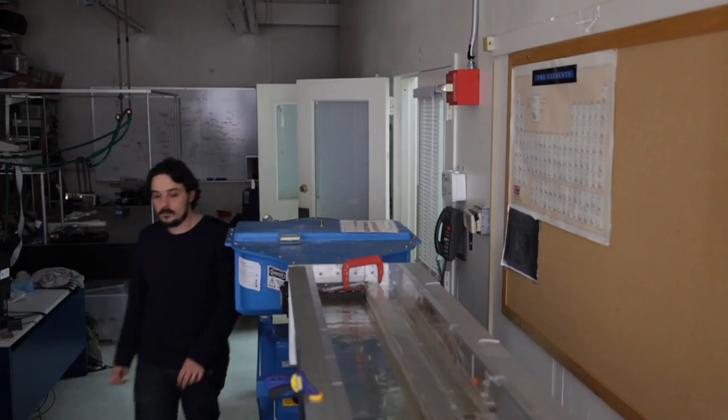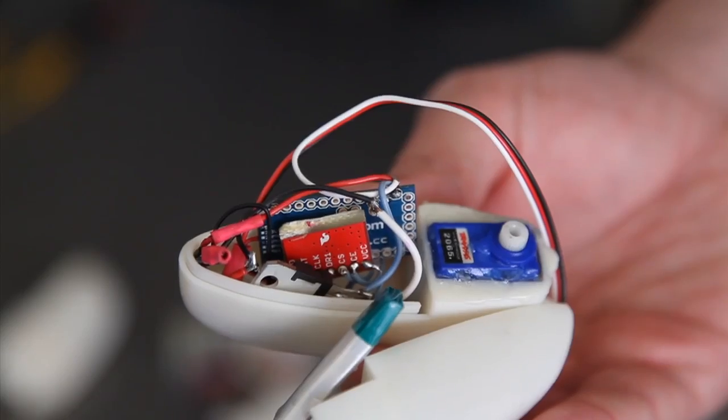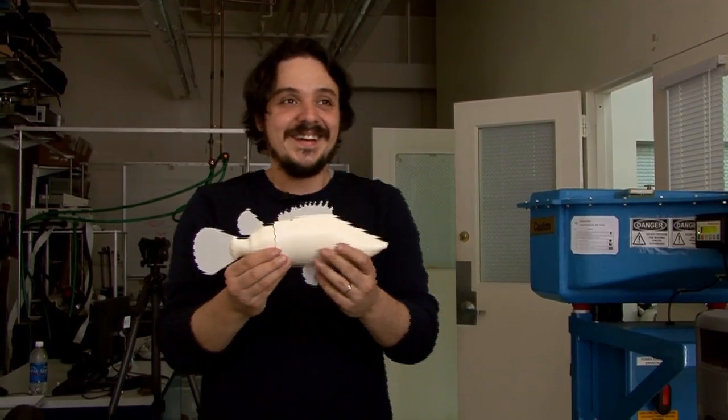Maurizio Porfiri specializes in designing robotic fish. And here's the goal: deploy robots in the environment and use them like sheepdogs to guide schools of live fish.